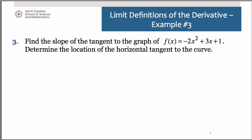The first one we're going to look at is the curve f(x) = -2x² + 3x + 1. We are asked to find the slope of the tangent to the graph, in other words the derivative, and then determine the location of the horizontal tangent to the curve. So since there is no point at which we are asked to find the specific derivative, it's implied that we're just looking for that general expression that will give us the derivative at any point. So that requires us here to use the first limit definition of the derivative.